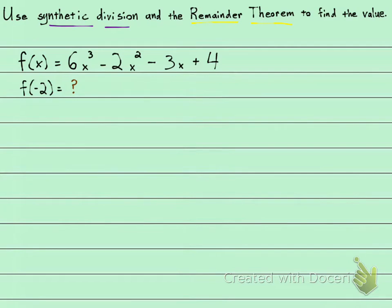So one way to do it is to plug in the negative 2, and I don't want to do that because a lot of people make mistakes with the negatives. So I'm going to use synthetic division, and that's what they're asking me to do.